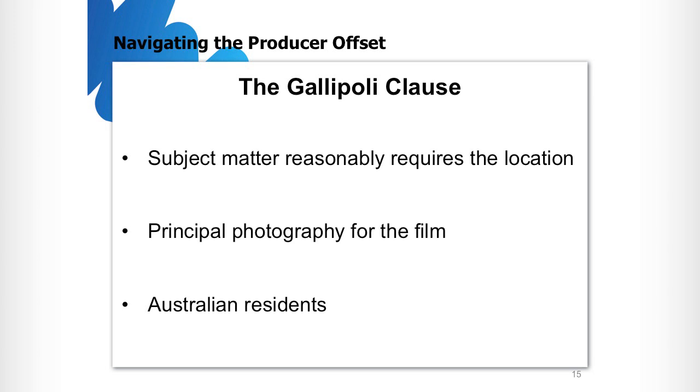Take Nick Cave starring in your film as an example — he lives in the UK, he's not an Australian tax resident, so you're not going to get his salary to be Quape. This can be an issue for actors, because there are a lot of Australian actors that don't live here. It's tricky, and it is explained in detail on the website with links to the Australian Tax Office. The important thing to remember about the Gallipoli clause is that it's intrinsically tied to subject matter and location shoots.